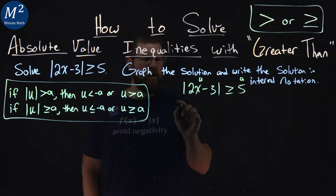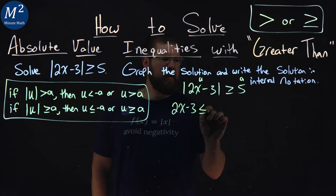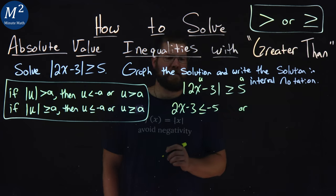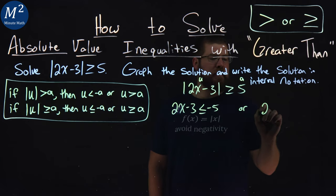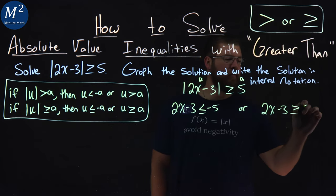So let's take that. We have our u value, 2x minus 3, is less than or equal to negative 5. Or similarly, 2x minus 3 is greater than or equal to positive 5.